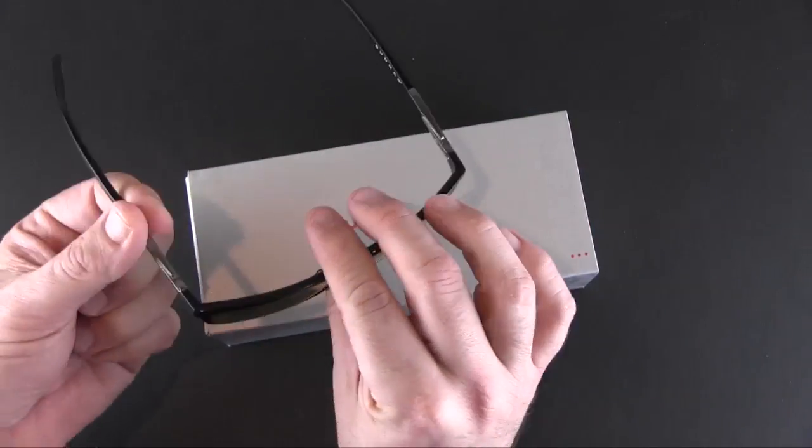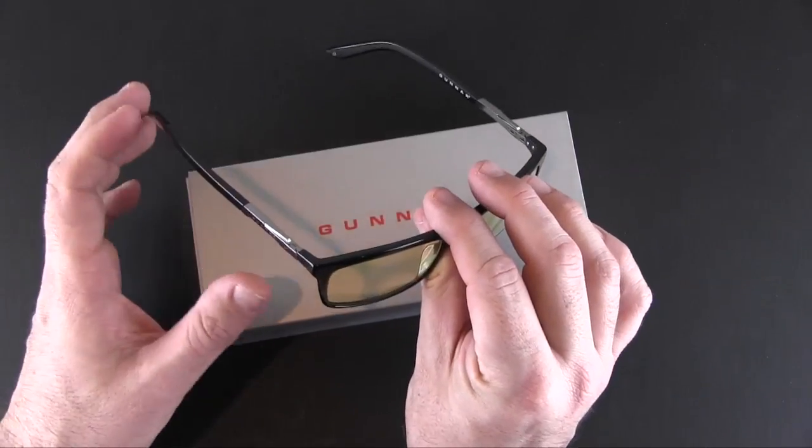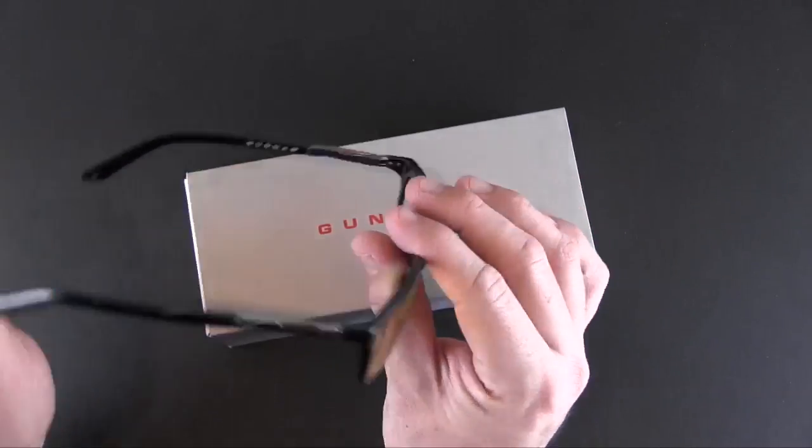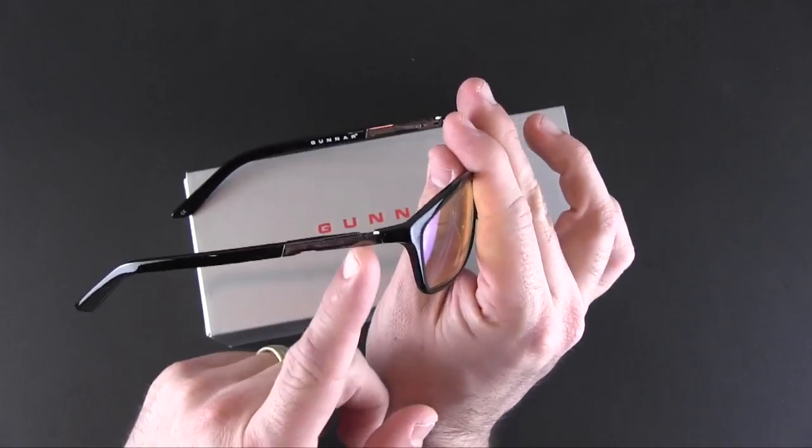So they offer a ton of different frames. These are called the Haas and they sell for $99. They're made from acetate as you can see and they have these metal accents here.